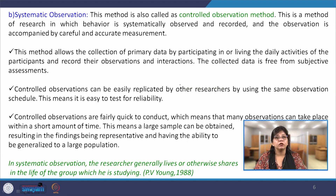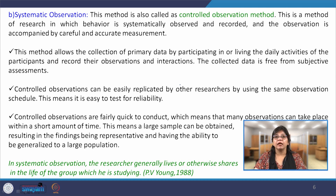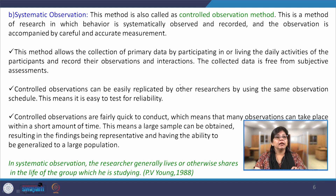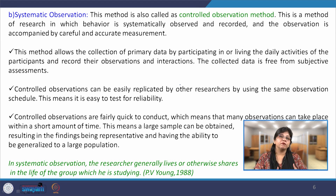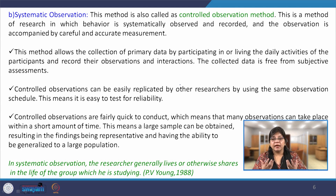Controlled observations are fairly quick to conduct, meaning observations can take place within a short amount of time, and a larger sample can be obtained, resulting in findings being representative and having the ability to be generalized to a larger population. This is only possible when the researcher is directly interacting with the group members. In naturalistic observation, there is a gap between the study group and the researcher, but in the controlled observation method, it becomes easy for the researcher to observe behavior more closely, and the data can be replicated to other samples as well, helping to generalize results.